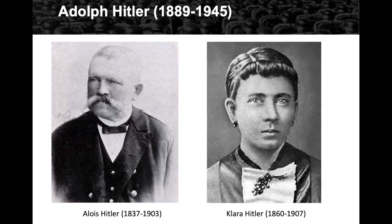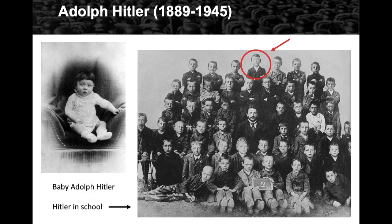On the left is Alois — a very stern-looking man, dates 1837–1903 — and on the right is Klara Hitler, 1860–1907. There's a 23-year age difference between them. Alois had been married before; his previous wife passed away and Klara had actually been a housekeeper in the home, before he ended up marrying her. There's baby Adolf Hitler on the left — a curious, inquisitive-looking child — and Hitler in school, circled in the center of the picture with his arms crossed, showing he did not like school.